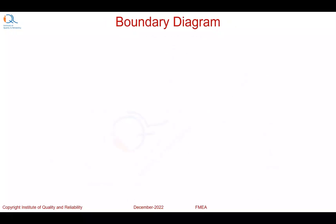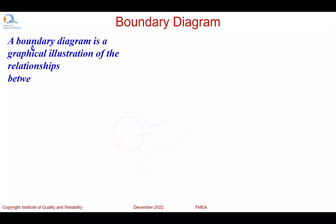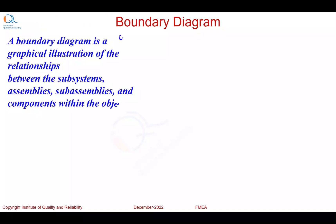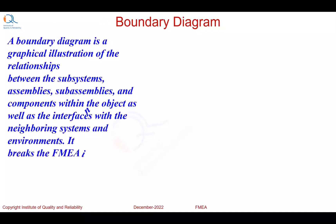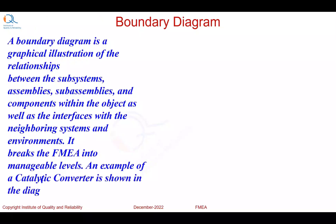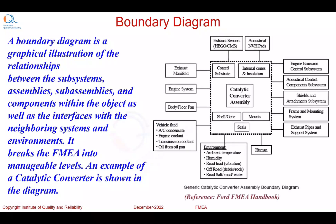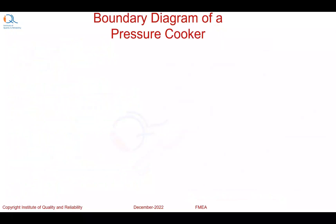Another tool commonly used in the preparation part of the FMEA is known as a boundary diagram. A boundary diagram is a graphical illustration of the relationships between the subsystems, assemblies, sub-assemblies, and components within the object, as well as interfaces with neighboring systems and environments. It breaks the FMEA into manageable levels. An example of a catalytic converter is shown in the diagram, taken from the Ford FMEA handbook. Here is another example of a boundary diagram for a pressure cooker.